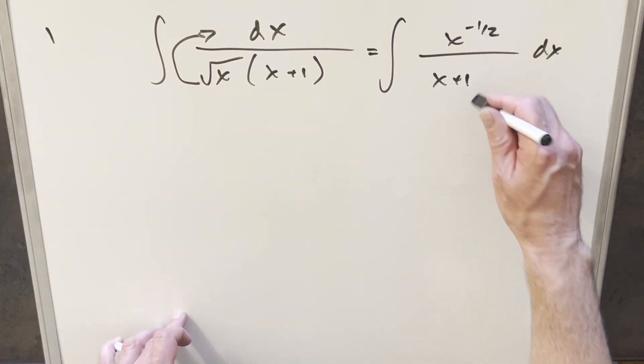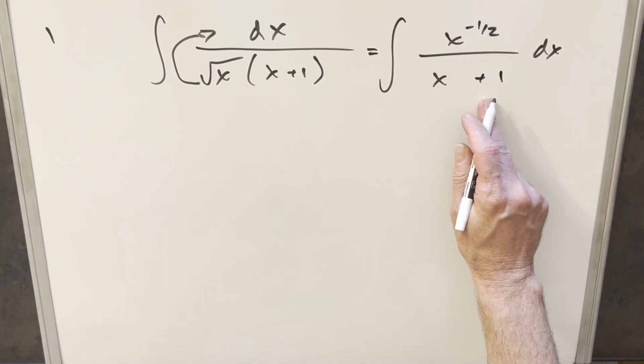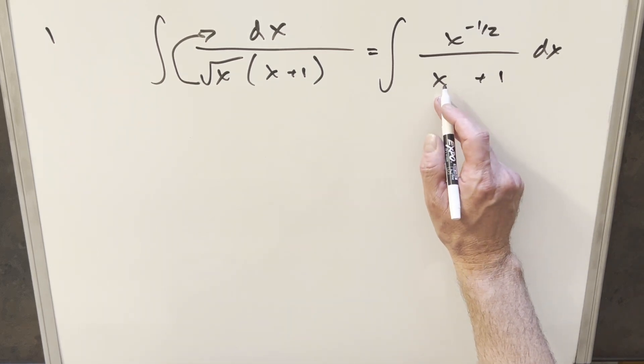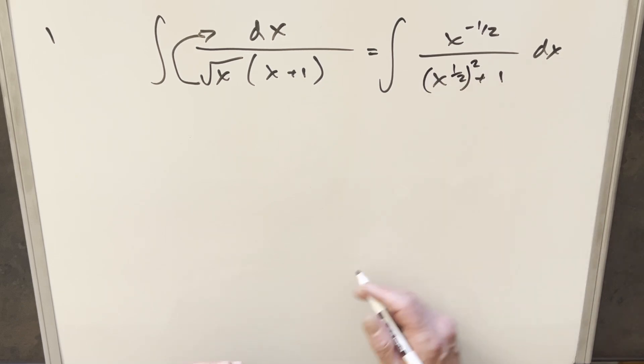And then doing it like this, in order to set up this u substitution, what I want to do is bring this plus 1 over here. Let's just turn this x into x one half squared, just because I think that's going to work well when we take a derivative.